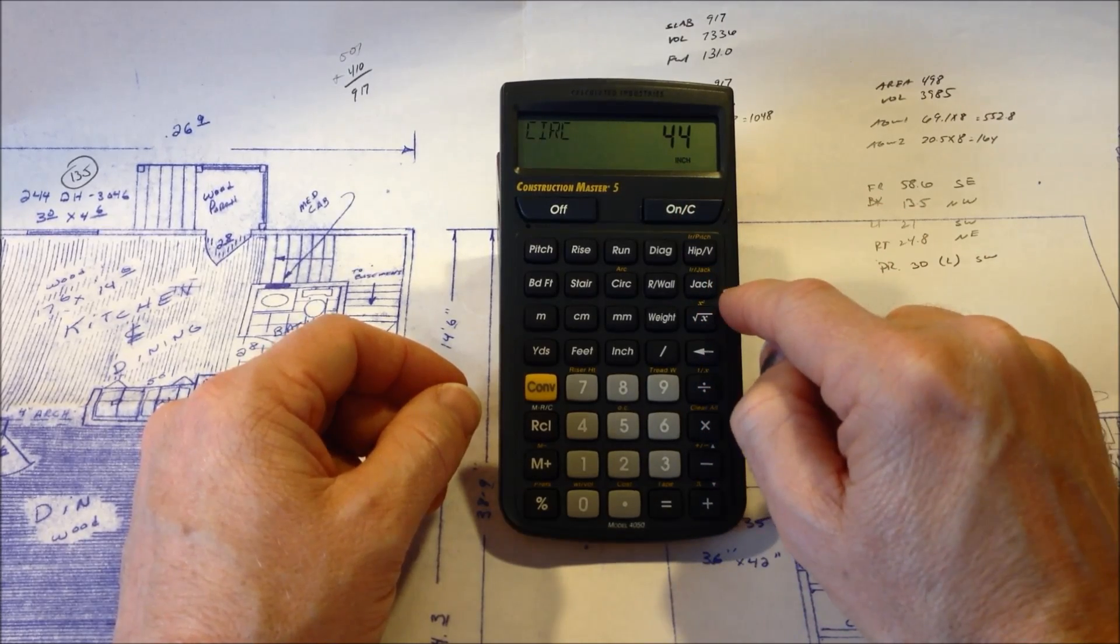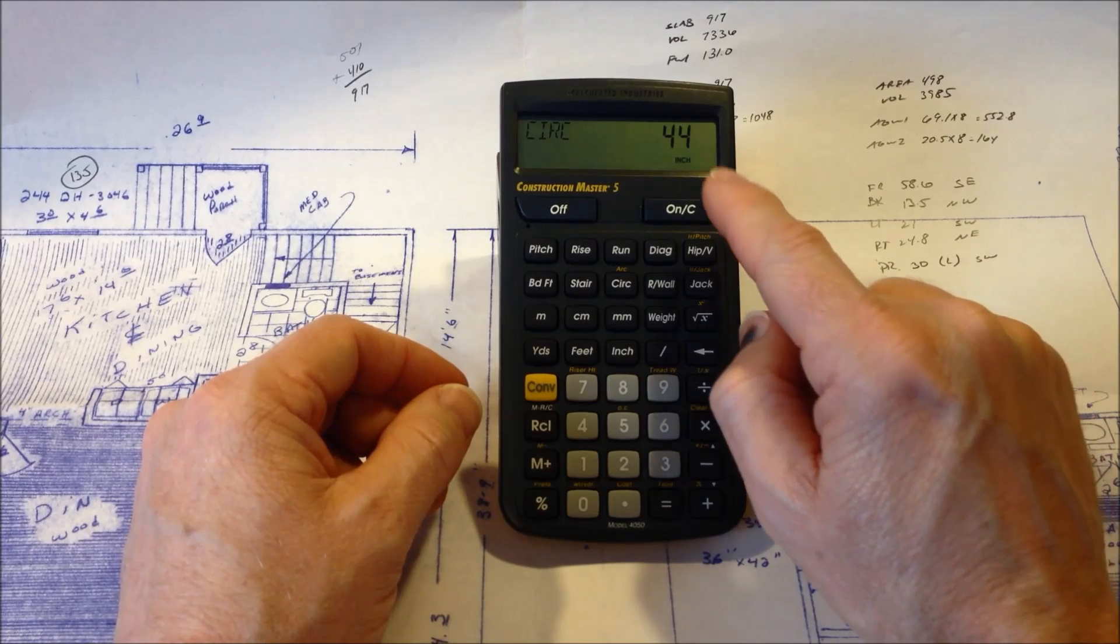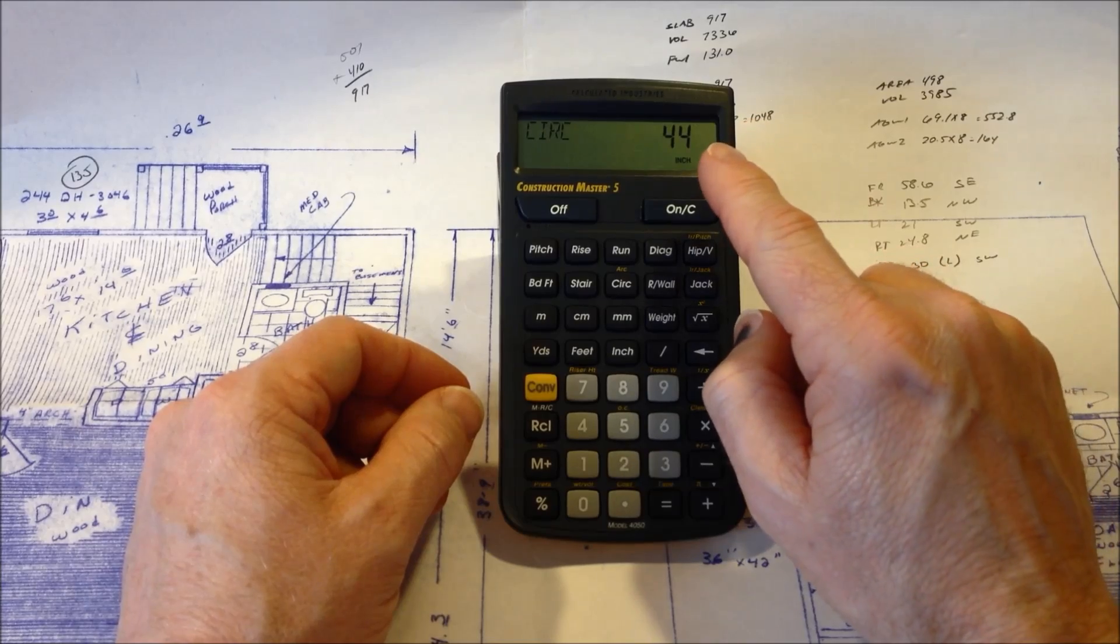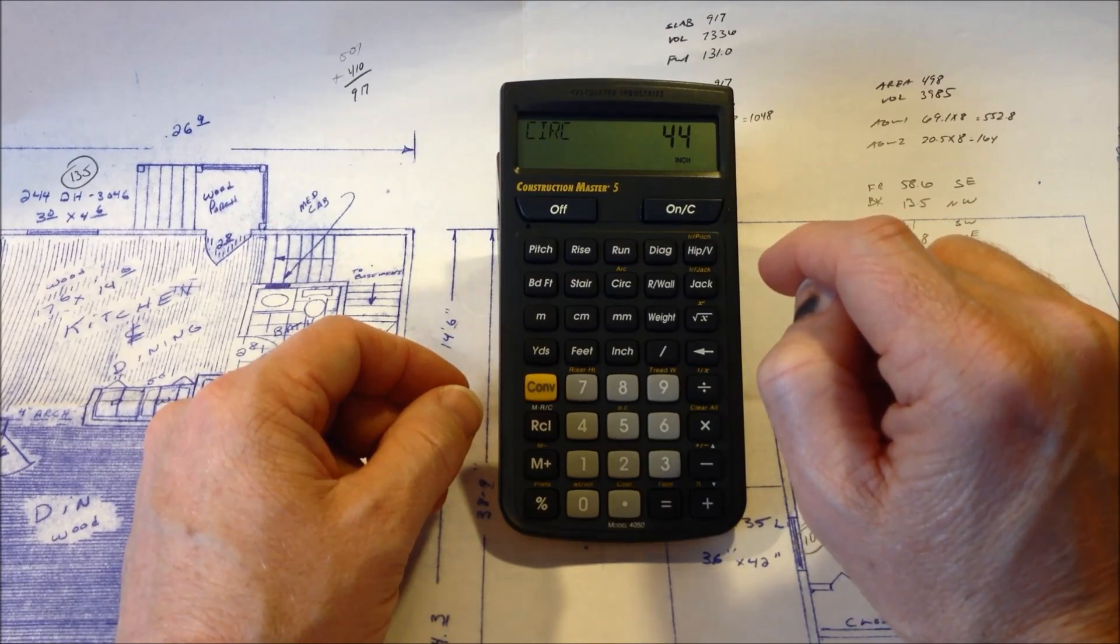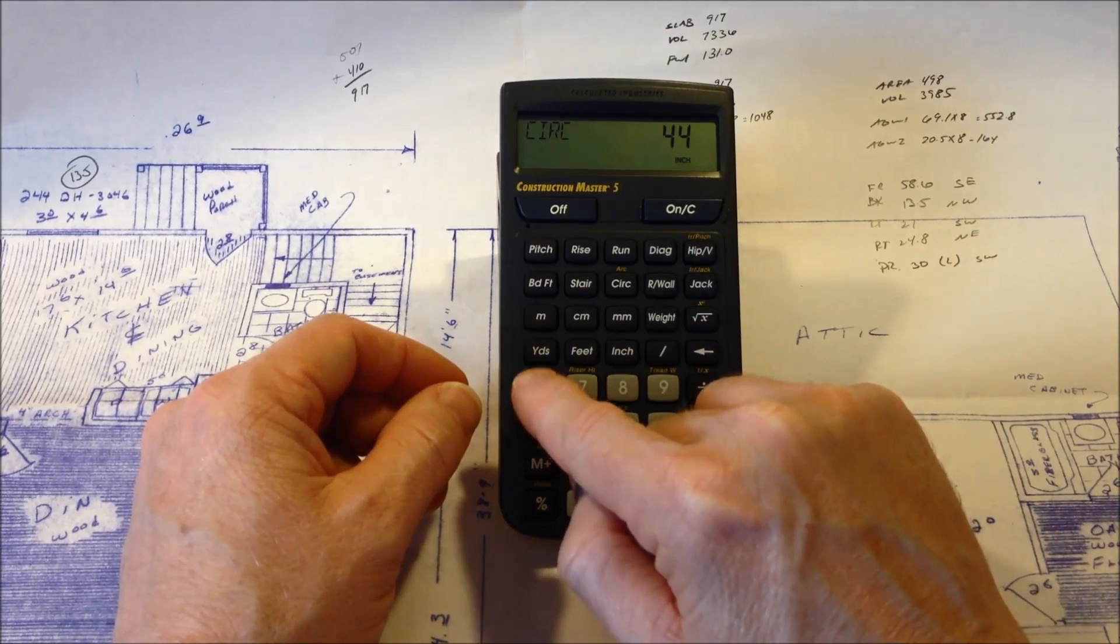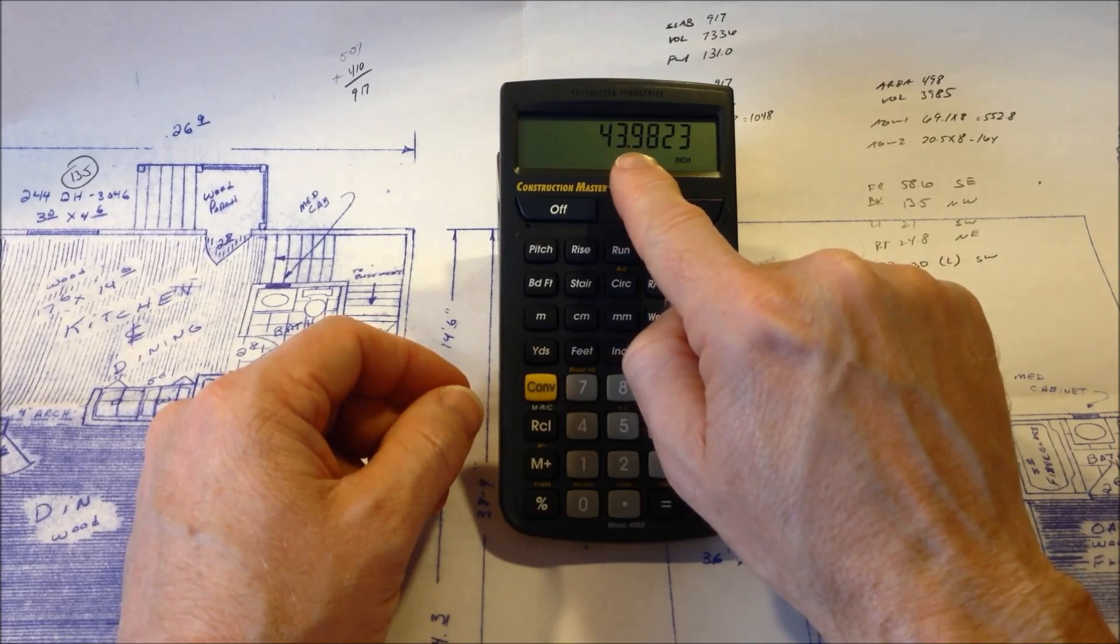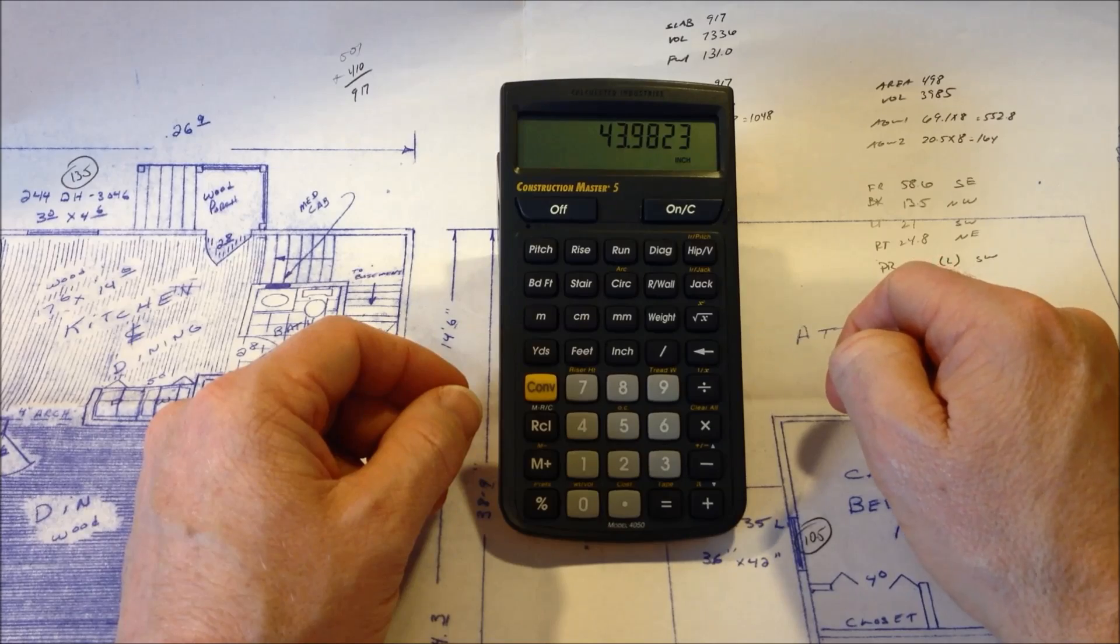I have the preferences in the calculator set to round feet and inches to the nearest half an inch. So it may be just a little bit more than 44 inches. So if we hit convert inch, it'll show us that it's actually 43.9823 inches.